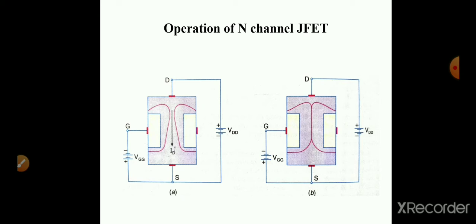The depletion region is formed based upon the doping level. In JFET, the P-type regions are heavily doped and N-channels are lightly doped. So the depletion region forms more into the lightly doped region, which is the N-channel. The depletion region extends deeper into the channel region and less into the P-region. Based upon the voltage at the gate-source terminal, the depletion region width also varies, and the drain current reduces. Therefore, the drain current can be controlled by varying the reverse voltage across the gate-source junction.